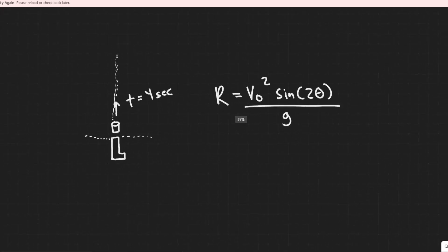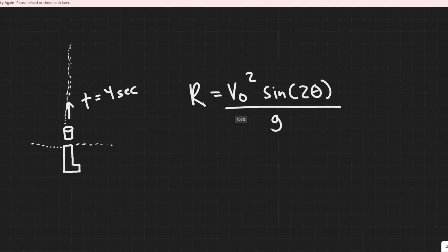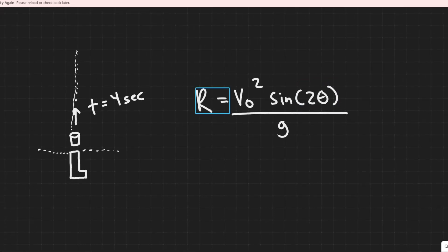The way we calculate that is by using this formula here. Basically, the range, when you fire something with some initial velocity v sub 0, with some launch angle theta on Earth, because we're assuming gravity is g, then r is going to be the range it travels. We're just going to solve for the velocity, and then plug in the maximum launch angle. If we plug in those values, we can get its maximum range.